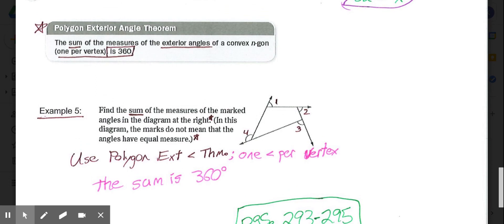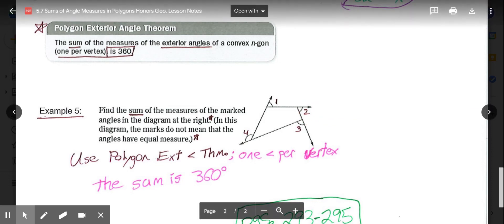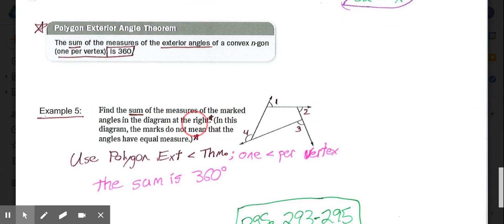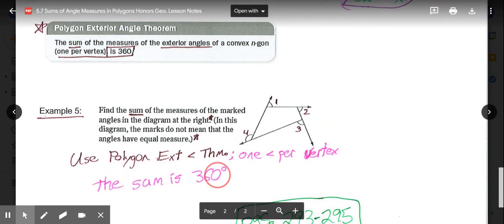If I wanted to find out what each vertex was, I would do 360 divided by 4. Find the sum of the measures of the marked angles in the diagram at the right. In this diagram, the marks do not mean that the angles have equal measure. Our four marked angles here, there's one per vertex of my original quadrilateral. According to my theorem, these four added together is 360 degrees.